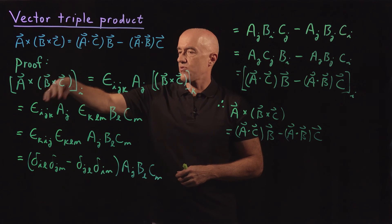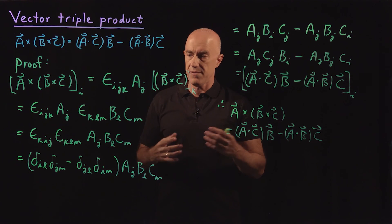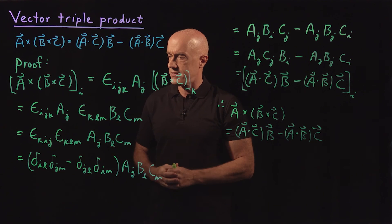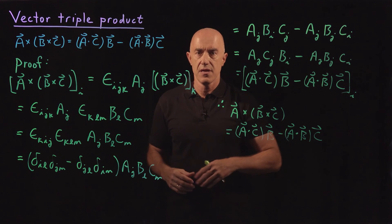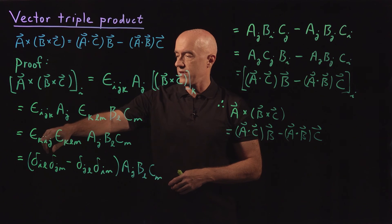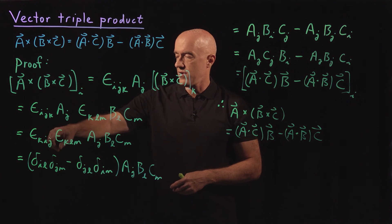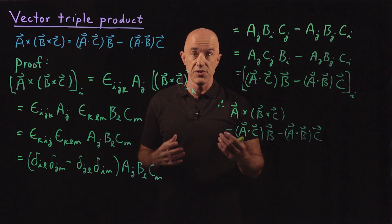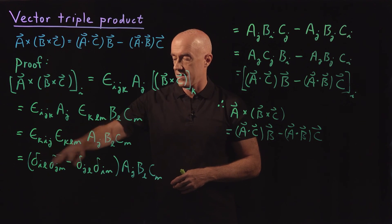We replace the cross products using the Levi-Civita symbol. We have to do that twice. Then we manipulate the indices so that if we contract the first index with the other two indices still free, then we can write that as the difference of the products of two Kronecker deltas.